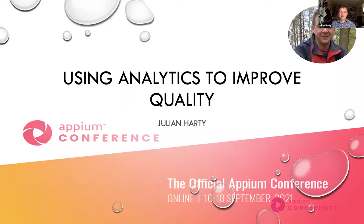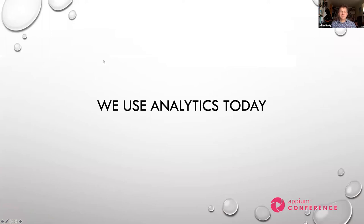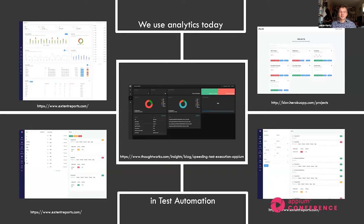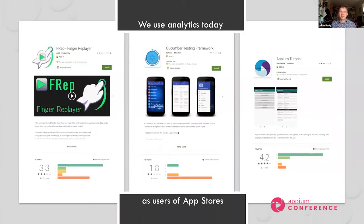Thank you very much. I look forward to helping people learn more about using analytics to improve the quality of their software. We use analytics today, whether we realize it or not — in terms of test execution and test automation. Here are screenshots from various tools working with Appium, showing graphs, percentages, colors, and bars — all generated by some form of analytics. As users, we use analytics when we go to the App Store and look at ratings, reviews, and scores to decide whether to install an app.